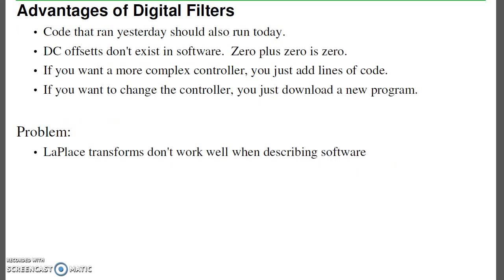The advantage of having a digital filter is that code that ran yesterday should run today. That's not always true with op-amp circuits. Wires fall out, capacitors burn out. With software, I don't have DC offsets, like you do with op-amps. If I want to build more complex controllers, it's easy. I just add more lines of code. It's easier adding more lines of code than building a new circuit. And if you want to change the controller, you don't have to change the circuit. Just download a new program. So software filters have a lot of advantages over hardware filters.